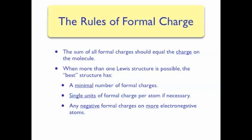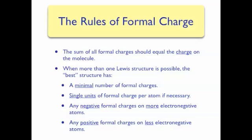Any negative formal charge should be on a more electronegative atom, since more electronegative atoms are better able to accommodate negative charges. On the other hand, positive formal charges should be on less electronegative atoms. Therefore, it is a goal in this class to always use these rules for writing Lewis structures — not only do we want to draw a Lewis structure that gives each atom an octet, we also want to make sure that it has a minimal number of formal charges.